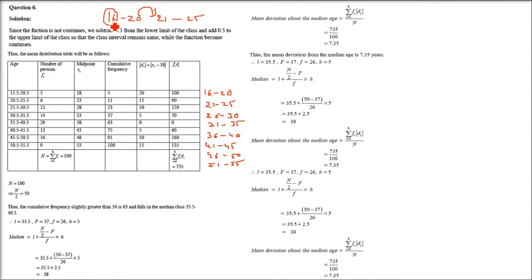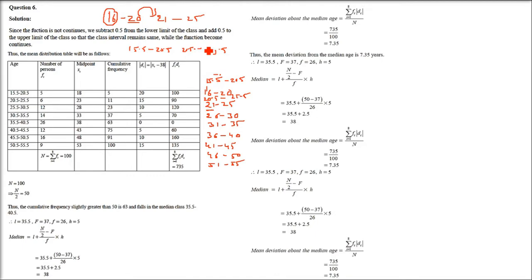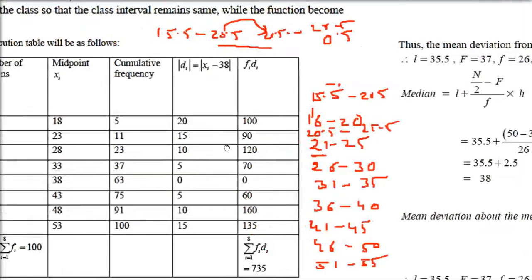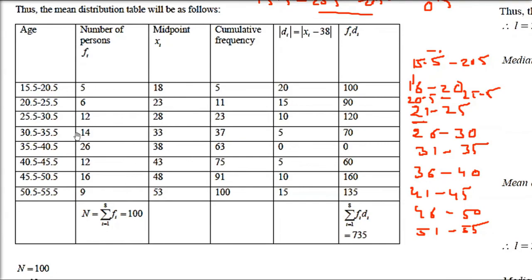To make it continuous, subtract 0.5 from each lower limit and add 0.5 to each upper limit. For example, class 21–25 becomes 20.5–25.5, and class 16–20 becomes 15.5–20.5. Now 15.5–20.5 and 20.5–25.5 share the boundary 20.5, so the range is continuous with no breaks.